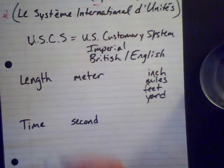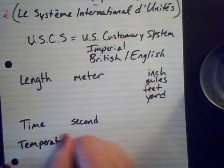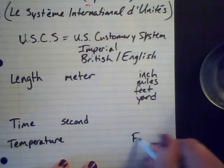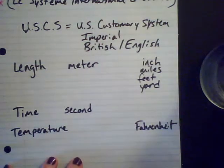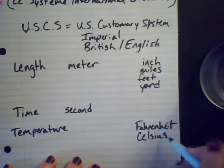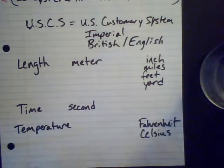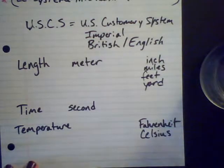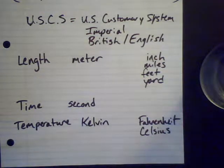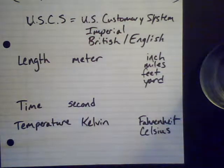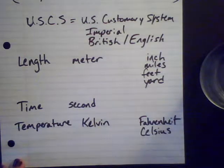In terms of temperature, in the U.S. we use Fahrenheit, named after the scientist who came up with the scale. The rest of the world uses Celsius. But that's not the standard we use in science — in science we use Kelvin, named after Sir Lord Kelvin. There are other temperature scales as well, but these are the three most common. We'll talk about the relationship between these scales in a different video, but our SI unit for temperature is Kelvin.